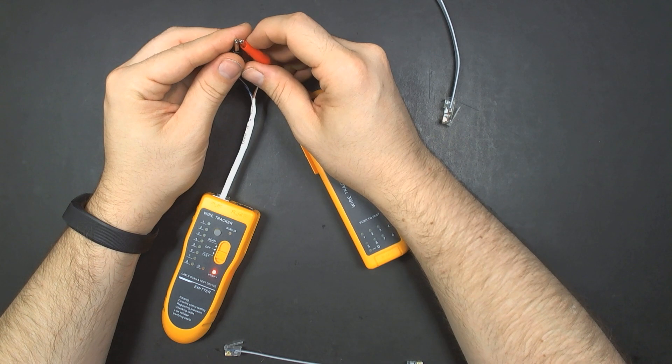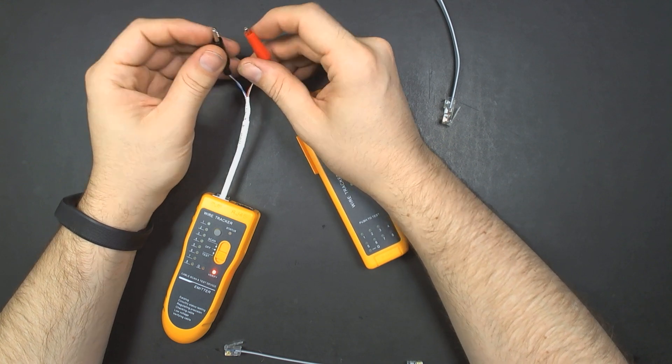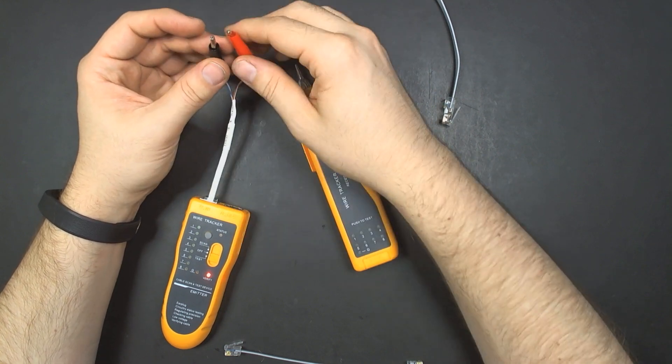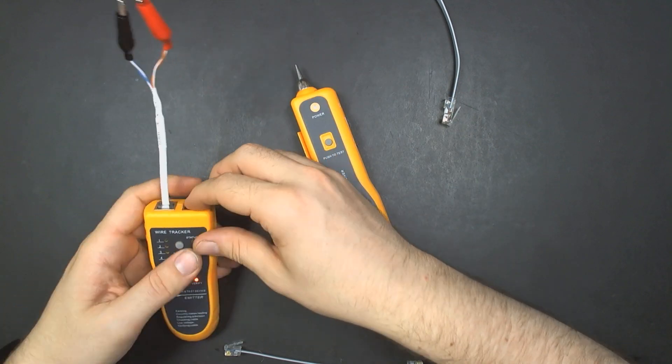As you can see, the one button is lighting up. If you have shorts in the pairs, you can easily test it with this. Pretty simple. You just pull off the connector, strip each pair, and try them. You can find out if your cable is messed up.